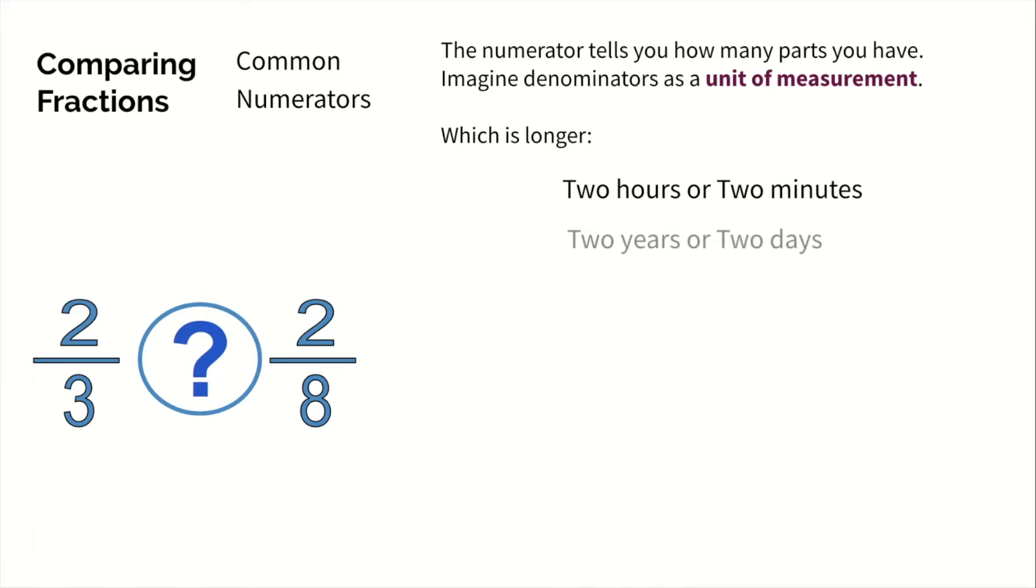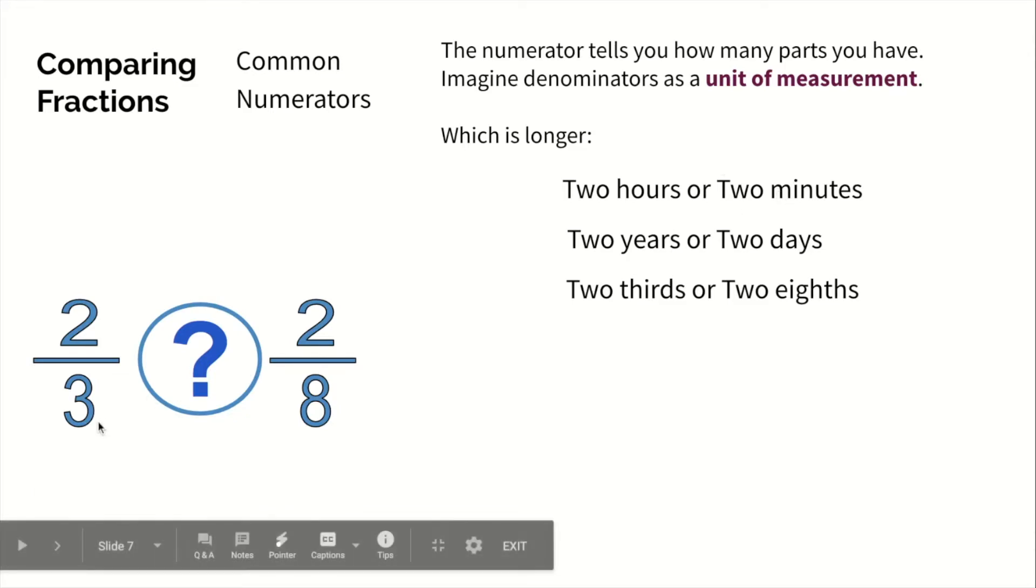Two years is way more than two days. What about two-thirds and two-eighths? Well, you just got to know which one's larger. Just like how we had to know hours is larger than minutes, thirds are larger than eighths. So that means two-thirds is greater than two-eighths.